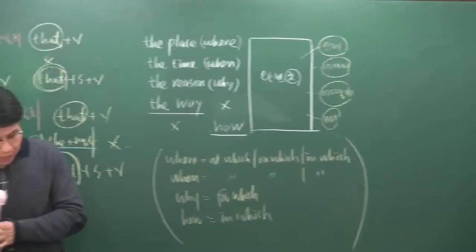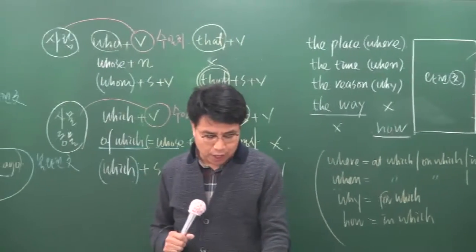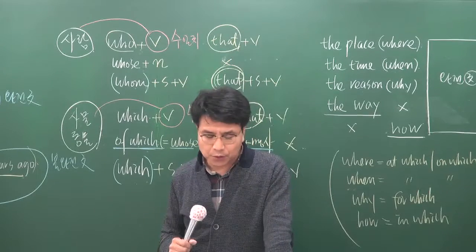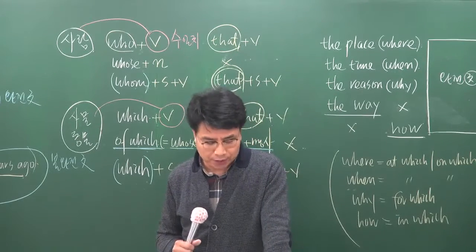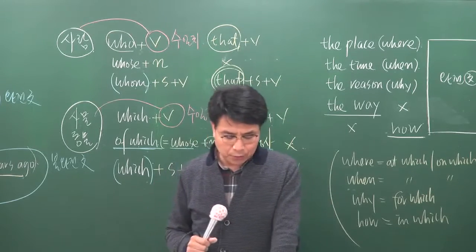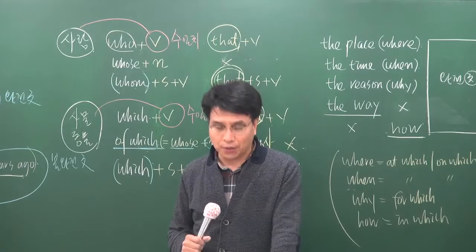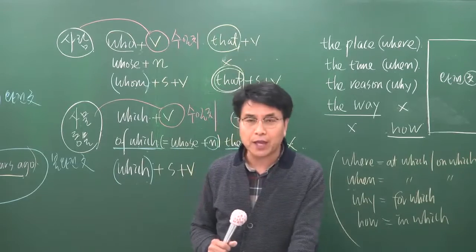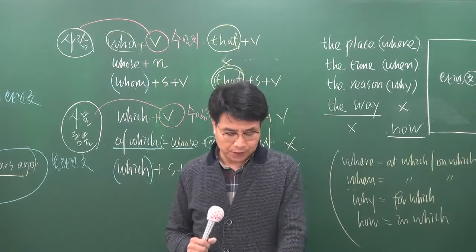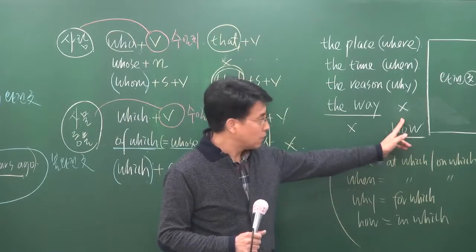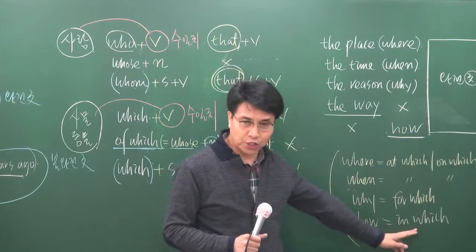Q4 예문: I know the place she lives → where를 씁니다. I don't know the time he will come back → when을 씁니다. the reason why, 그리고 the way 뒤에는 how를 쓰지 않고 in which를 씁니다.